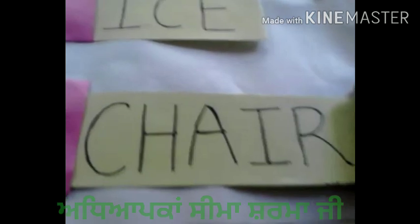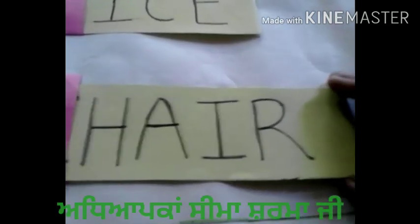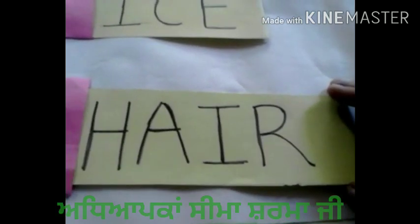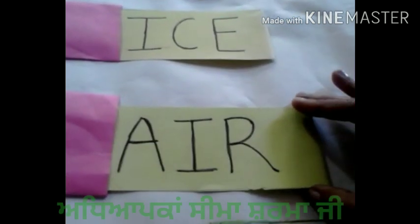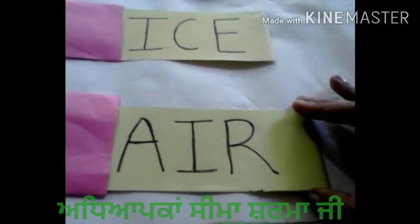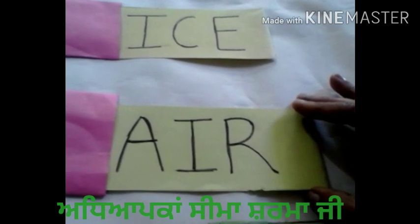इसके बाद एक और है — जैसे हमारे पास है chair. तो हम C को remove करते हैं, तो क्या बन जाता है? Hair. और H को remove करते हैं, तो क्या बनेगा? Air.